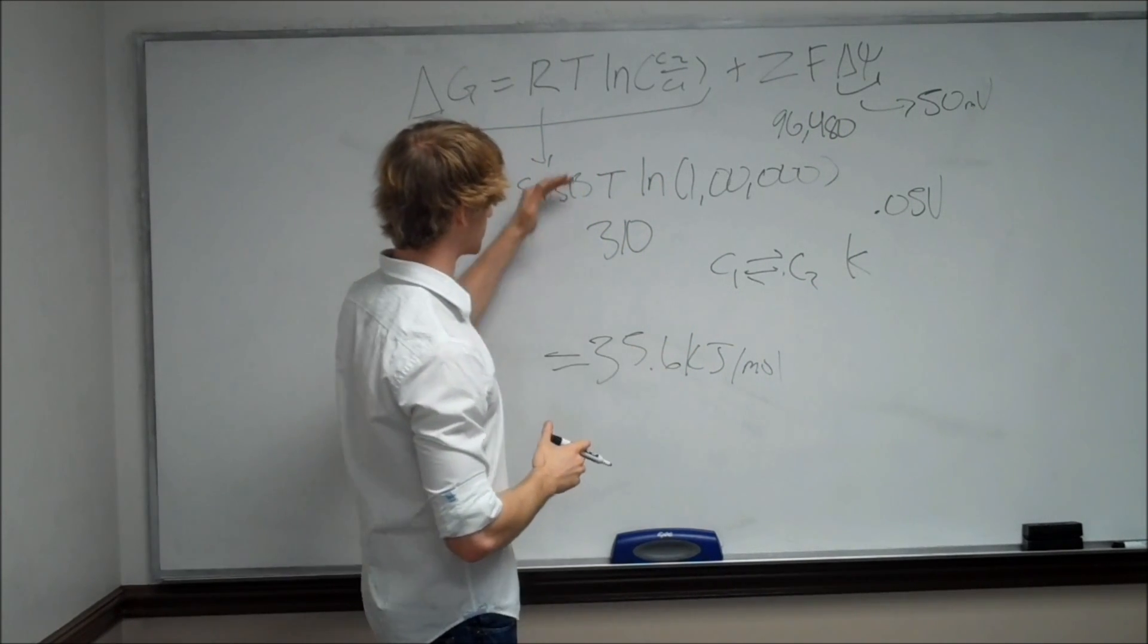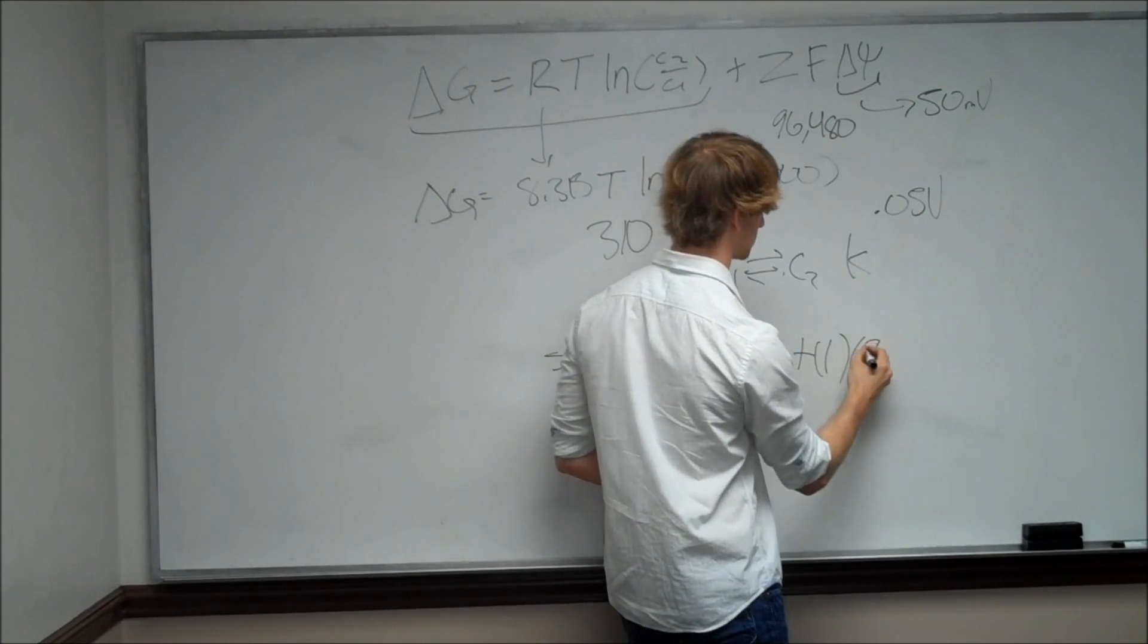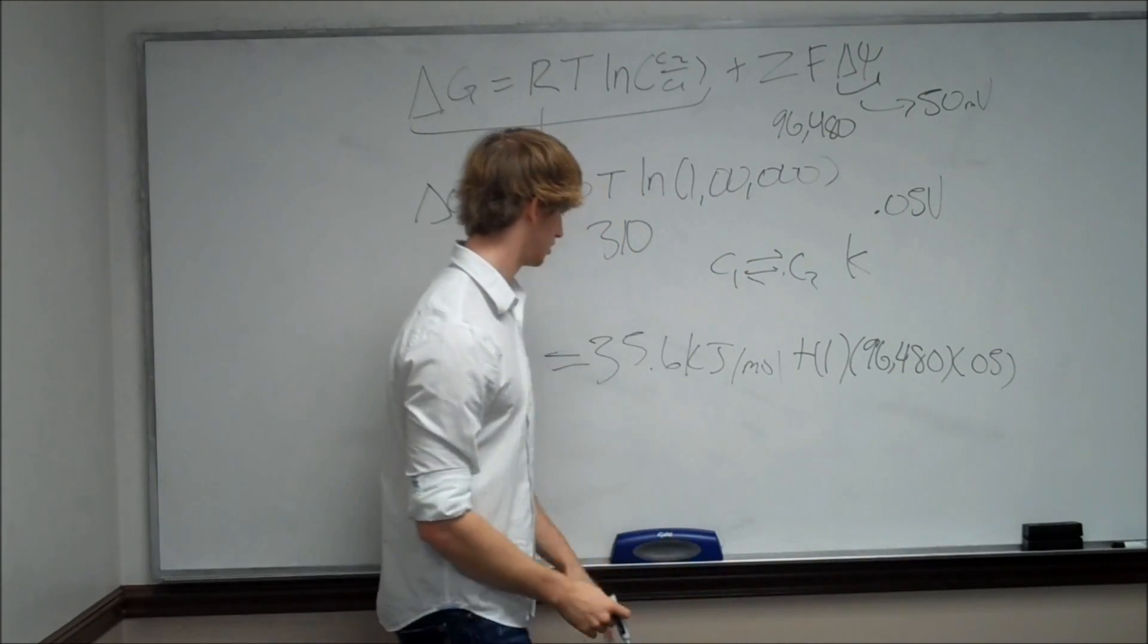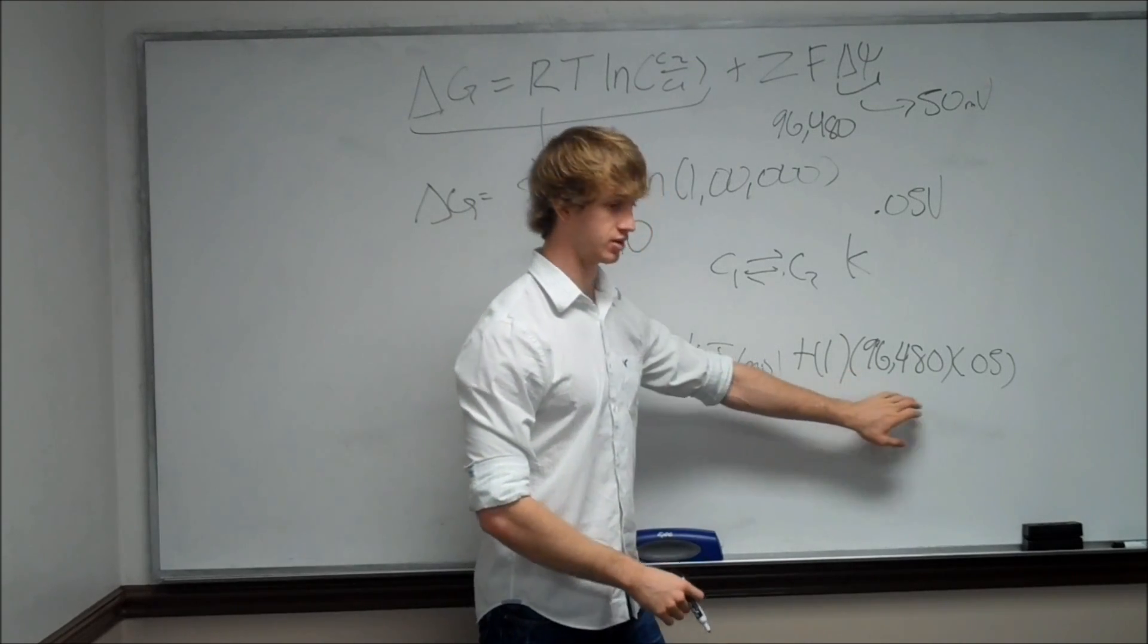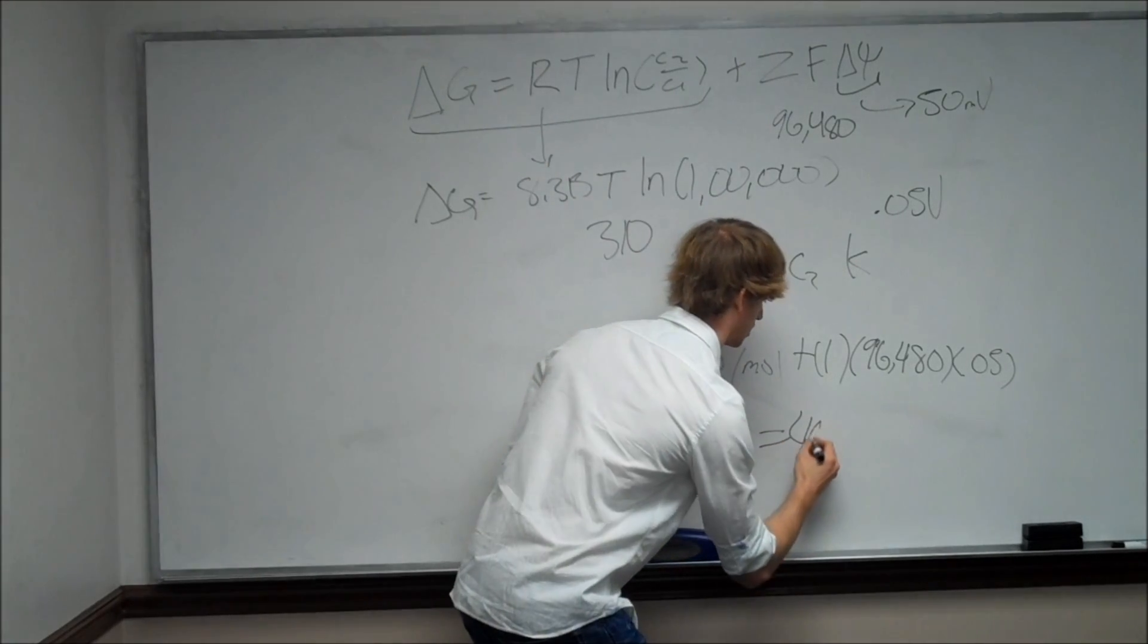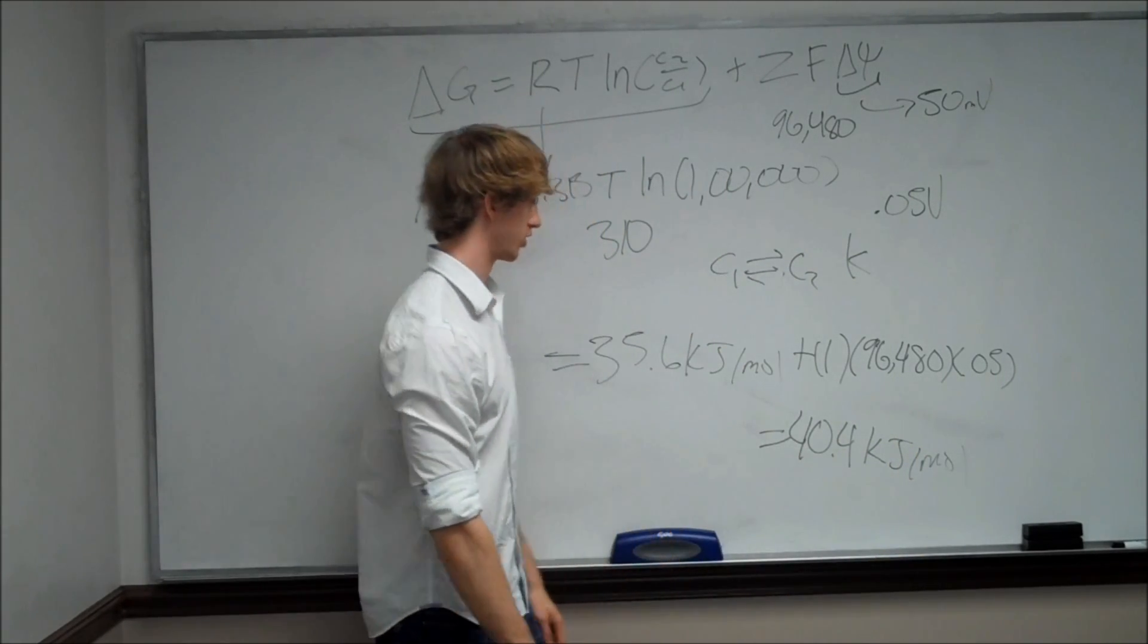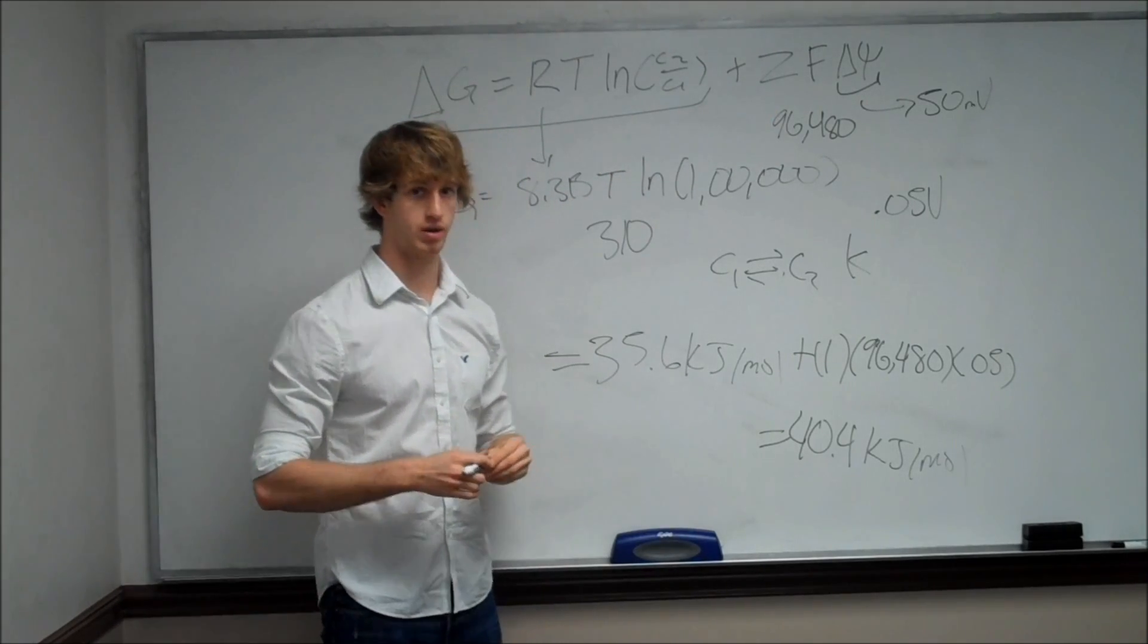So we have this section. This is the same, but we're going to add negative 1 multiplied by Faraday's constant, 96,480 multiplied by 0.05 volts. So this value that we already got, 35.6 kilojoules, plus Faraday's constant multiplied by 0.05, should come out to around 40.4 kilojoules per mole. And you can just plug it in your calculator. Remember, it's important to understand what each one of these values represents. And that's number 15.